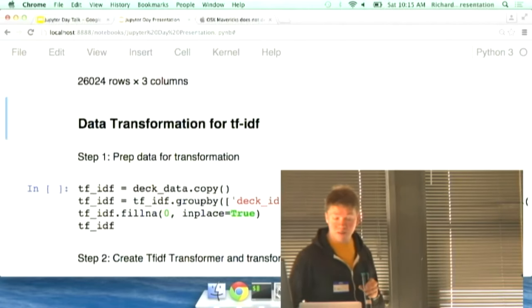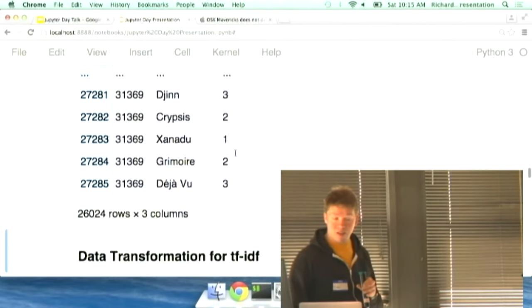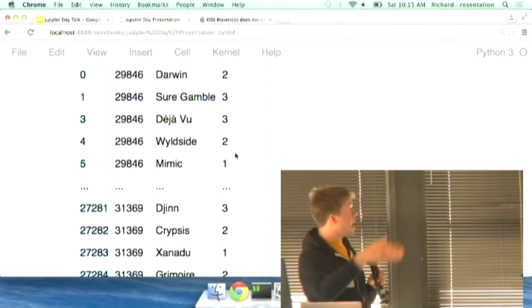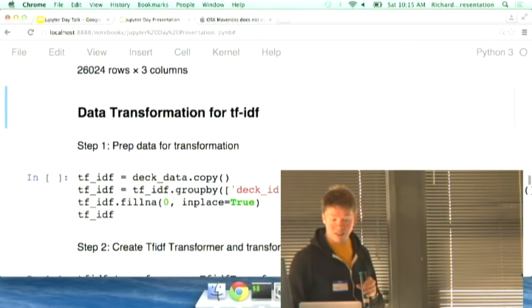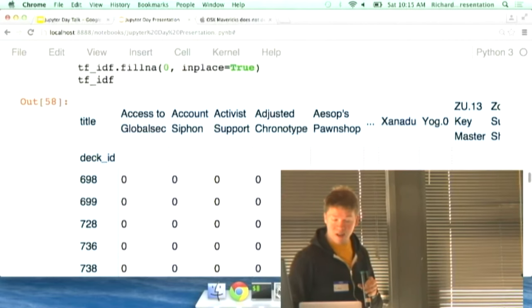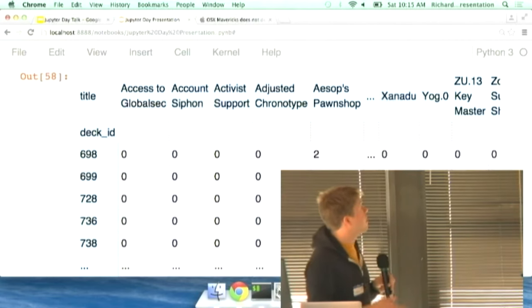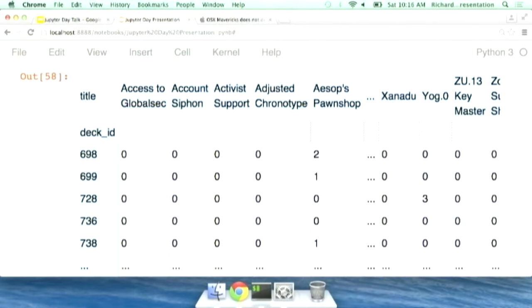So we're going to transform some of this data. We know the data looks kind of like this right now. I'd rather have it for every column I wanted to have a card name. So we can kind of do that by using this group by and unstack functionality in Pandas. So we'll just kind of do that. And we end up with something that looks like this. So every card has its column. Every deck is one row. And we have the number of cards that they have. Zero through three.